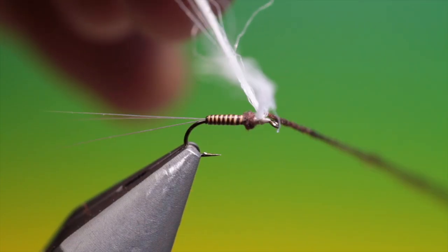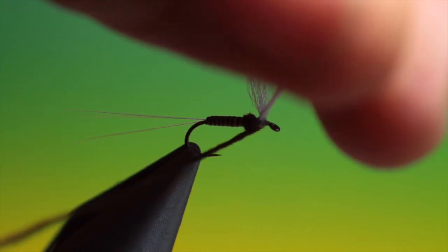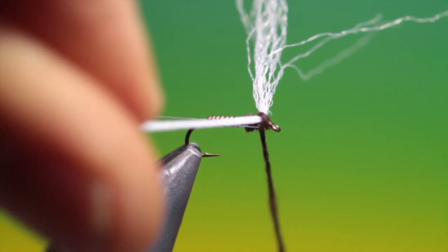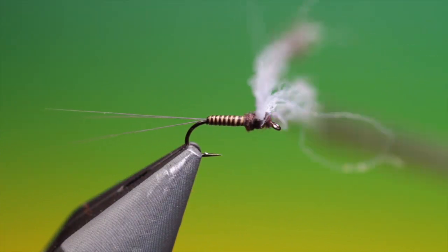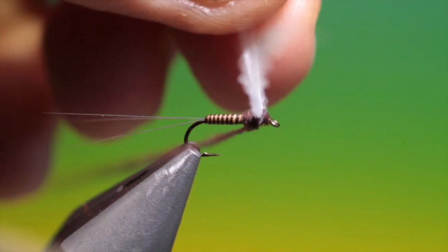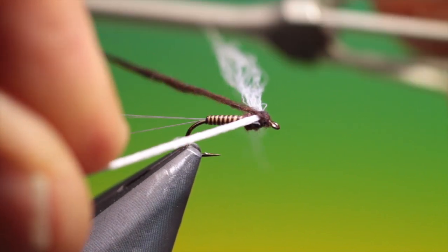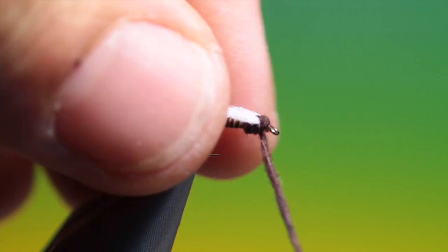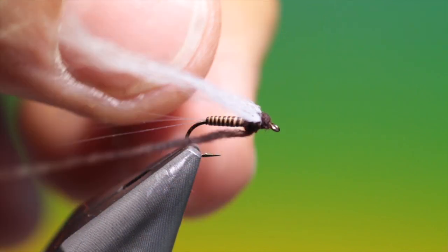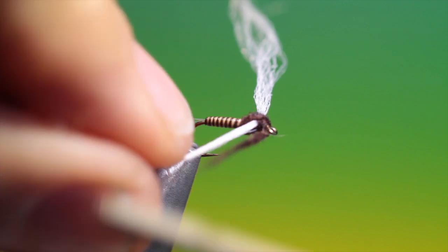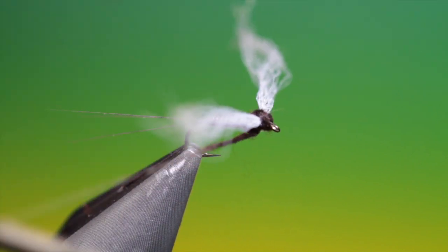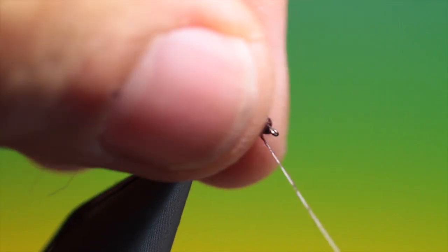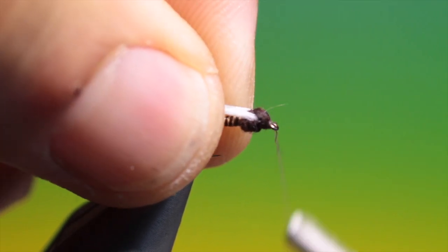Split the wing up. And we just go figure of eight over the thorax. Come forward.